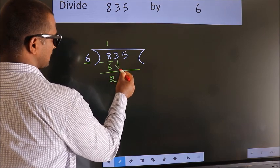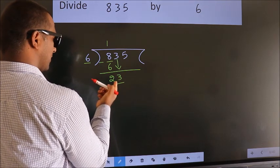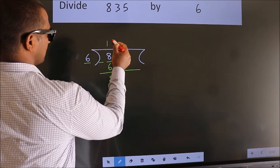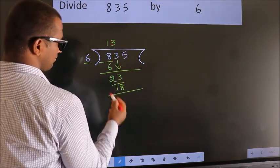After this, bring down the beside number. So, 3 down, making 23. A number close to 23 in the 6 table is 6×3=18. Now, we subtract. We get 5.